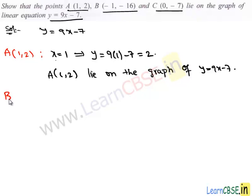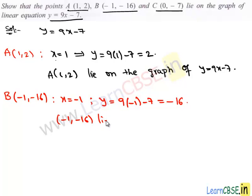Let's take the next point. Here we have B, where its x coordinate is -1 and the corresponding y coordinate is obtained by substituting the value of x, which is -1. And we have 9(-1) minus 7, which is -16. Therefore, we can say that (-1, -16) is the solution and it lies on the graph of the linear equation y = 9x - 7.